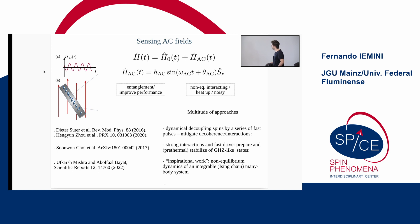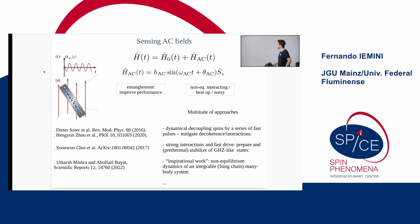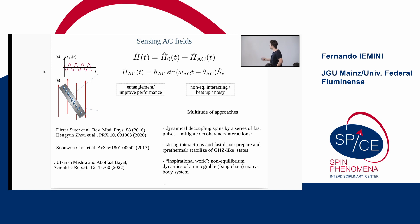There are different approaches to this problem, many discussed this morning and afternoon. One could use dynamical decoupling of the spins with fast pulsing to mitigate interactions and achieve longer coherence times and better sensing performance. Alternatively, one can exploit entanglement by using a fast drive with strong interactions to prepare entangled states like GHZ states initially, stabilizing the system at least pre-thermally to improve the sensing protocol.